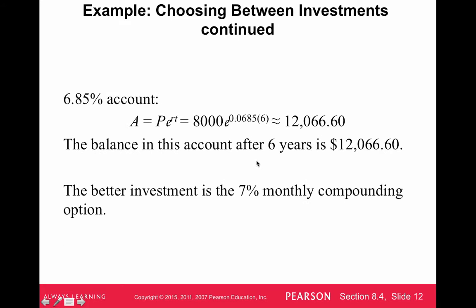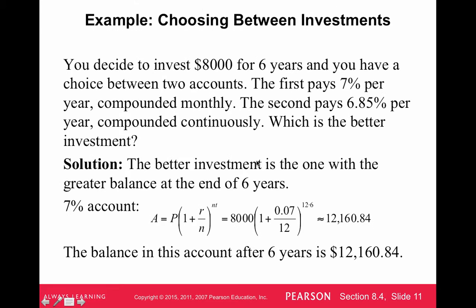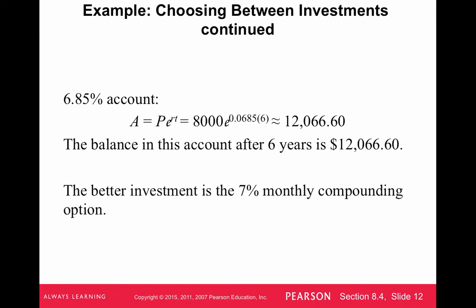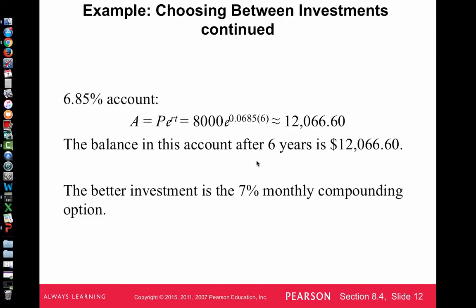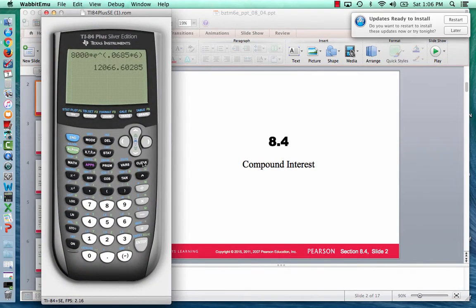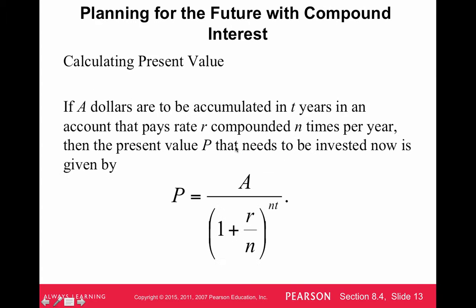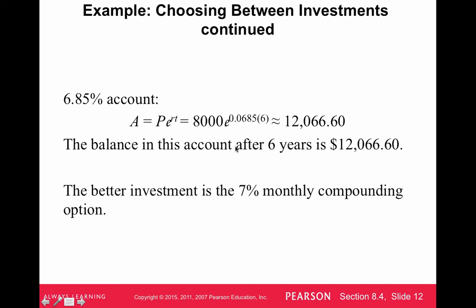So which one is better? The one where you get more money: $12,160.84 from the 7% monthly compounding account. The key thing I'm showing you is how to get E in your calculator — press 2nd then LN — and that gives you E for the continuous compounding formula.